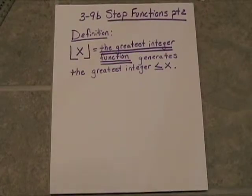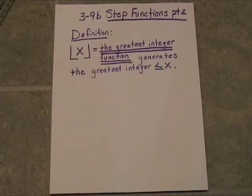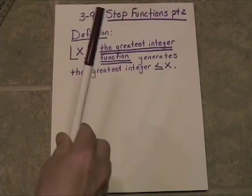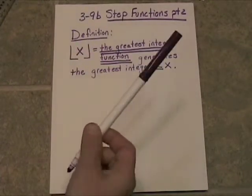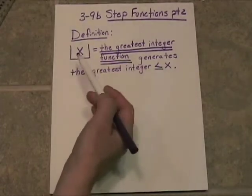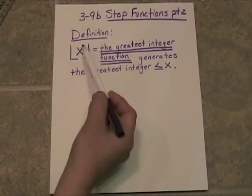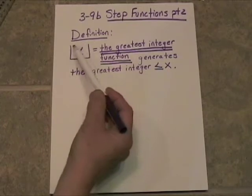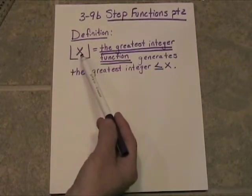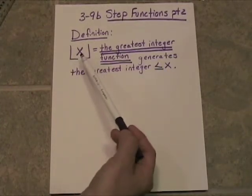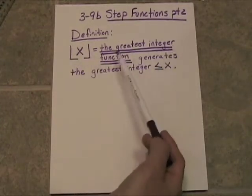Let's go to Lesson 3.9, Part B. This is again step functions, and we're going to continue on and talk a little bit more about something called the greatest integer function. Here's the formal definition. We've got a new form of notation here — it's an x that kind of looks like it's in a little broken box. This notation means the greatest integer function.